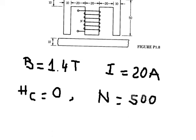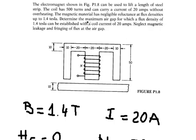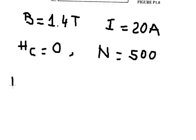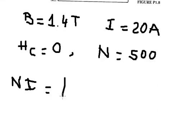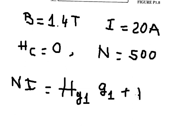We know that we want to find the maximum air gap, so we can apply the formula. We can see that there are two gaps. That means we will have Hg1 multiplied by g1 for gap number one, and Hg2 multiplied by g2 for gap number two.